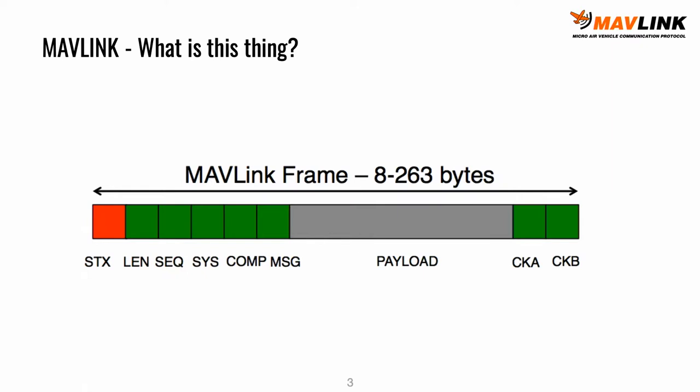MAVLink is so many things — I actually think we need a quick introduction. On the lowest level, it's a couple bytes on a bus: first in, first out, single packet. It starts with a start symbol, a length, a sequence number that is wrapping, a system ID, a component ID, the message type, payload, and a checksum.